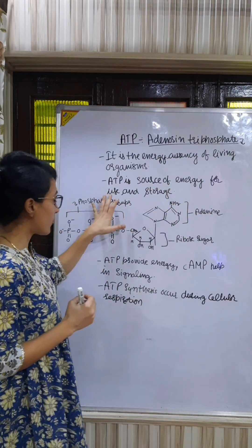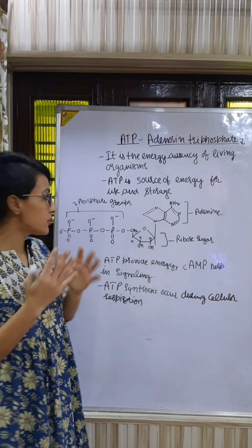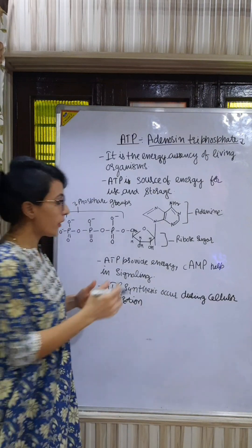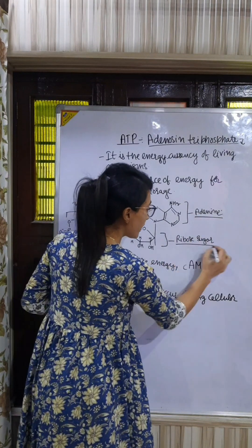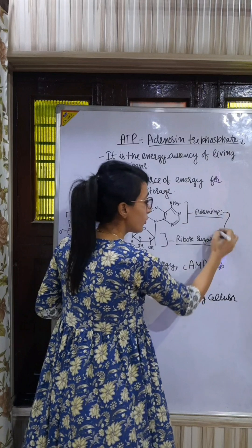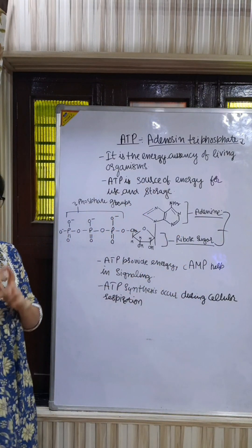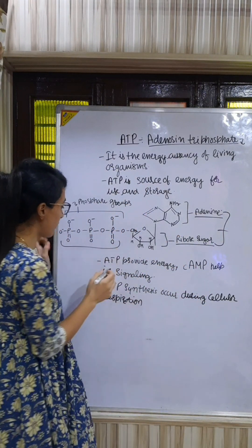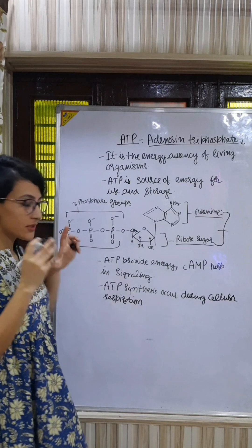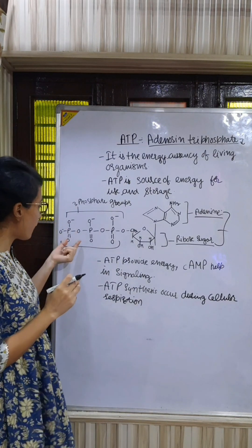ATP contains one adenine and one ribose sugar, and together we call them adenosine. It also has three high-energy phosphate groups, and energy is conserved in the form of the phosphate molecule.